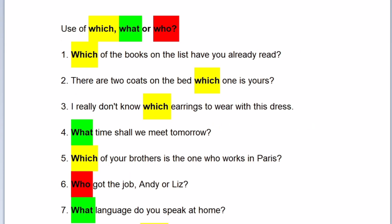Now, let's move to the use of which, what, or who. Number one. Which of the books on the list have you already read? There are two coats on the bed. Which one is yours? I don't know which earrings to wear with this dress. What time shall we meet tomorrow? Which of your brothers is the one who works in Paris?